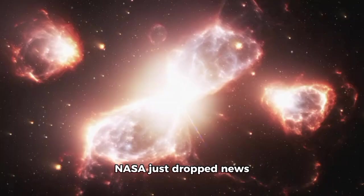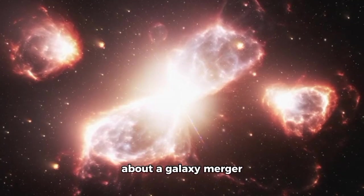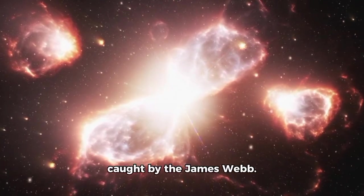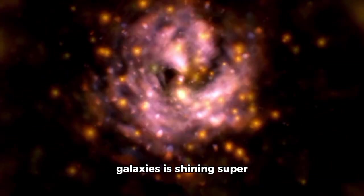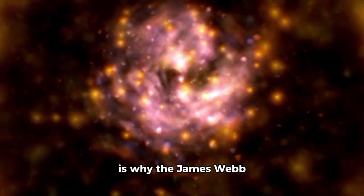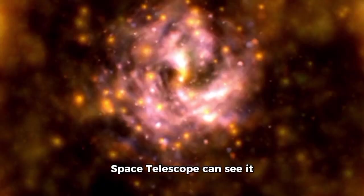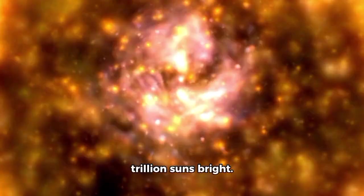That's not all. NASA just dropped news about a galaxy merger called ARP 220, also caught by the James Webb. The collision of these galaxies is shining super bright in infrared, which is why the James Webb Space Telescope can see it so adeptly, similar to a trillion suns bright.